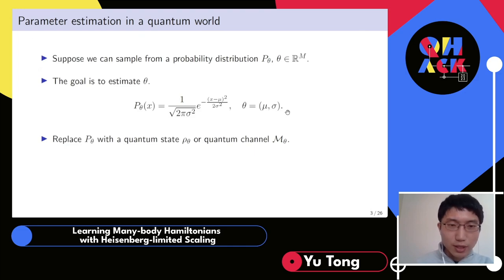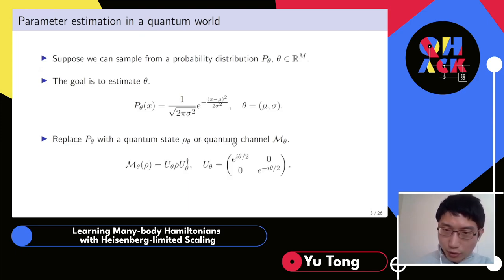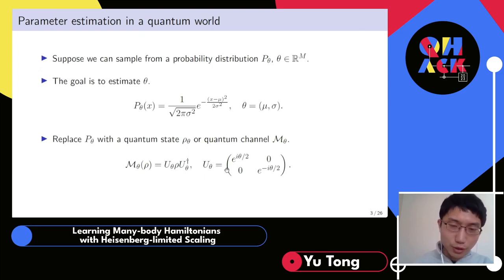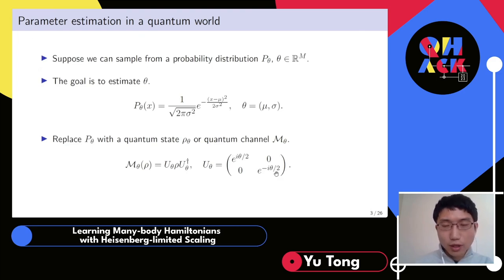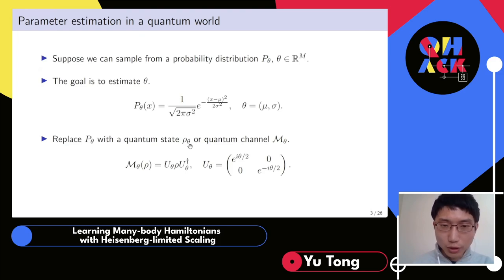This setting can be extended to the quantum world. We may replace the classical distribution p-theta with a quantum state rho-theta or quantum channel m-theta. For a quantum channel, we can consider a unitary channel — a unitary u-theta acting on a quantum state rho — where u-theta is a simple z-rotation. We may want to apply quantum channel m-theta to some quantum state and learn what those parameters are.